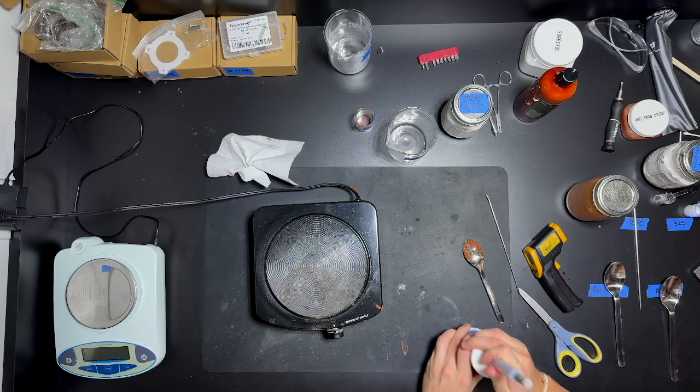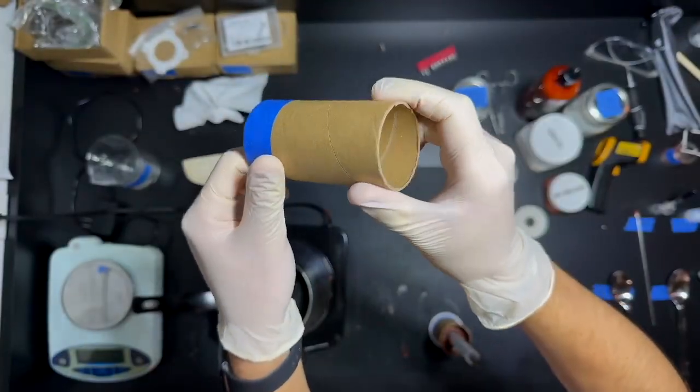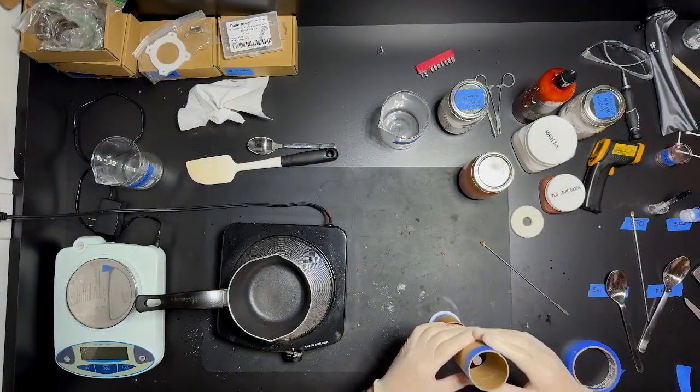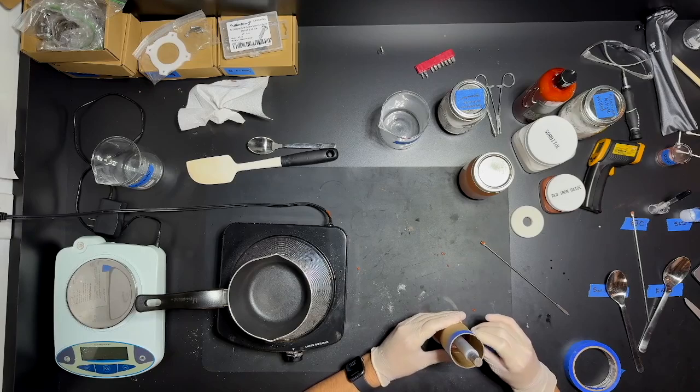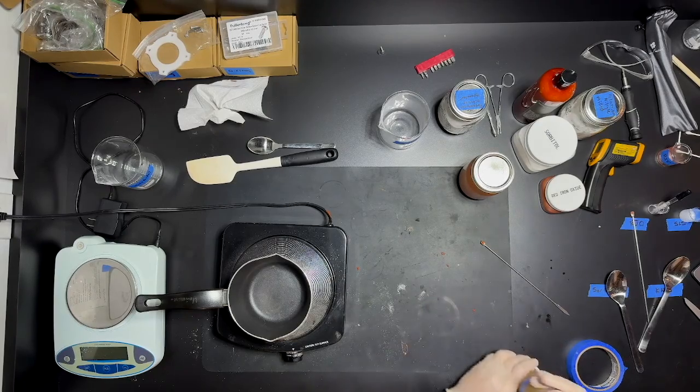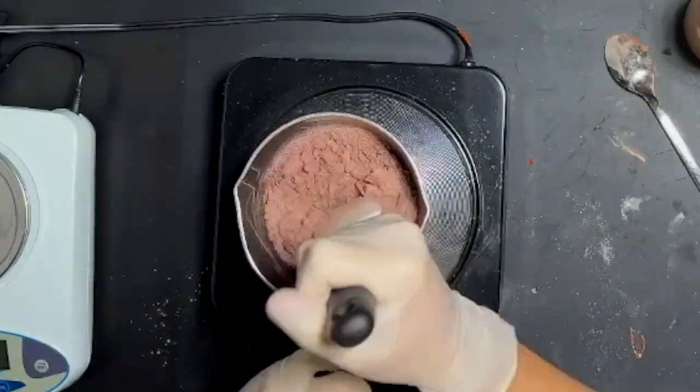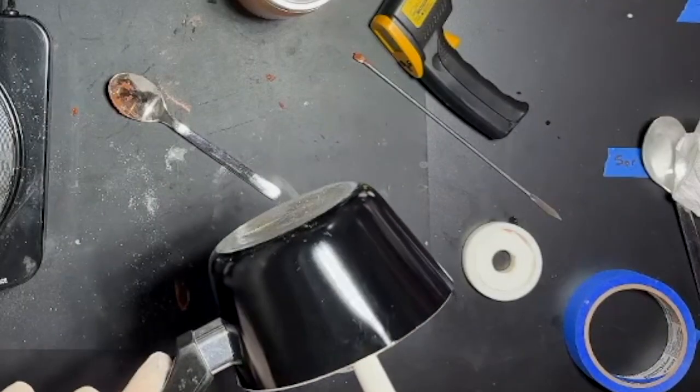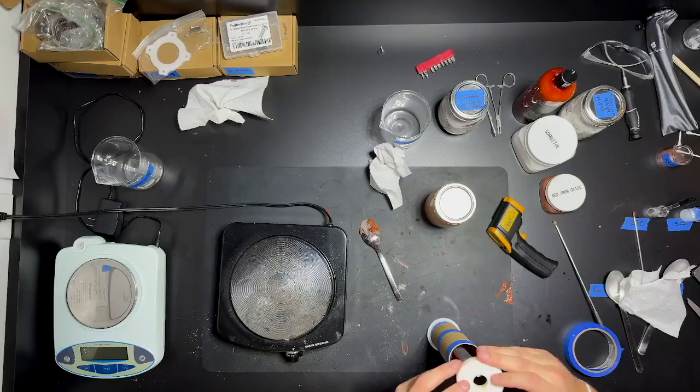Now I let that sit for 12 hours to dry and harden and then I start with the top section. I connect the top section by just taping it at the seam and then I do the whole propellant mix again. I won't bore you with that. Here's just a sped up version of melting it down. And then I pour it out into the propellant I casted the day before.